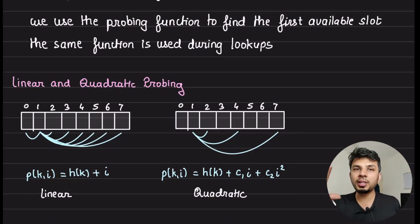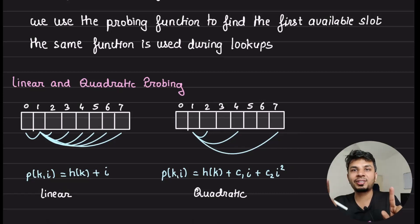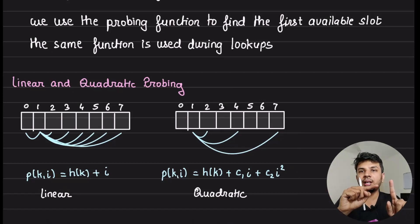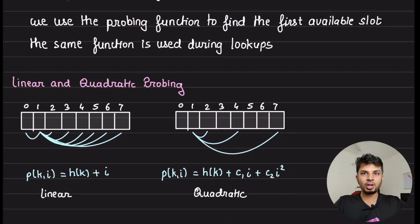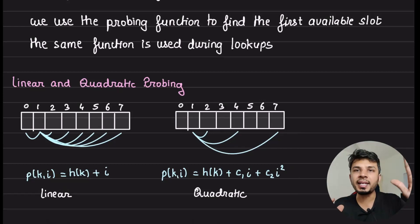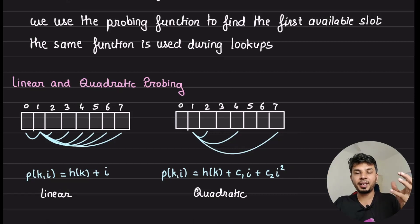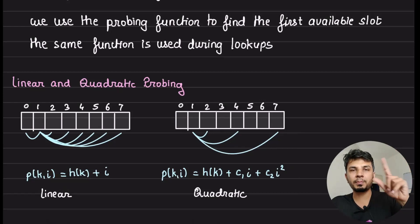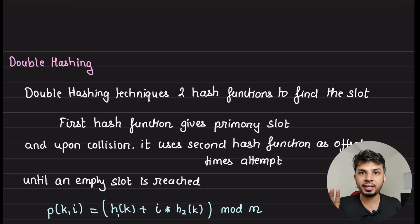A better way is quadratic probing, where instead of finding one slot to the right, we use an arbitrary quadratic function to find the next slot. Instead of jumping with i, we jump with i squared — so offsets go +1, +4, +9, +16, +25, and so on with some arbitrary polynomial. This helps utilize the space of the hash table and minimizes clustered collisions because it takes very large leaps to find the next slot.